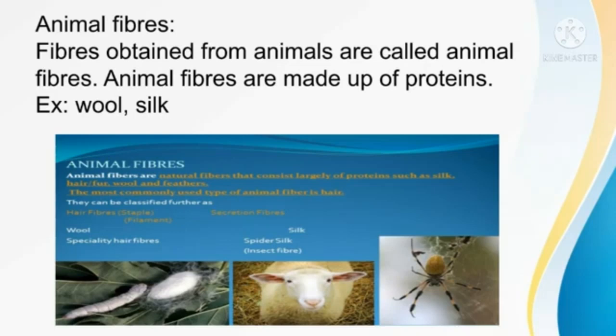Can you give an example for animal fibers? Yes — wool and silk. These two are the best examples for animal fibers. Animal fibers are obtained from animals and are made up of protein. In this lesson, we are going to discuss about wool and silk, starting with wool.